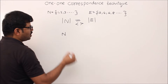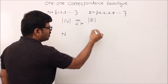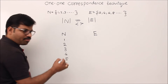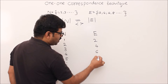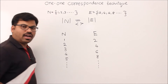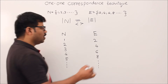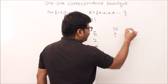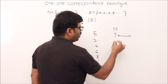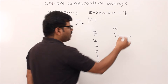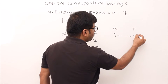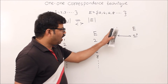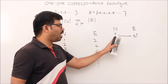I take natural numbers on one side and even numbers on the other side. Natural numbers: 1, 2, 3, 4, 5, and so on. Even numbers: 2, 4, 6, 8, and so on. I show a one-to-one correspondence between them. The formula is: any element i belonging to the natural numbers should be put into one-to-one correspondence with e, which is 2i. So I am putting a one-to-one correspondence between N and E using the mapping i → 2i.